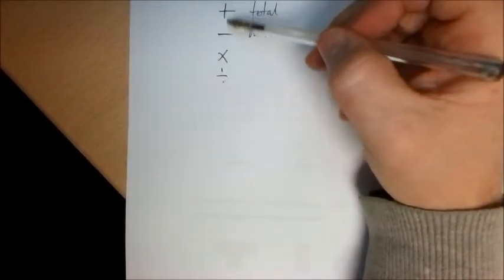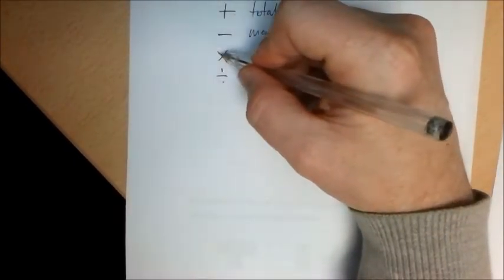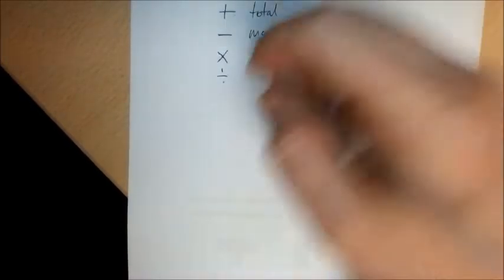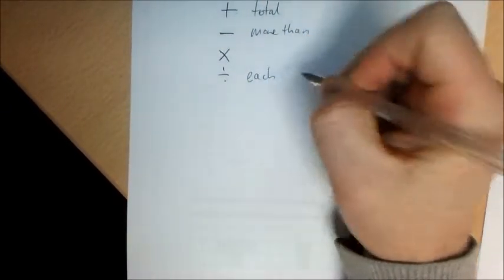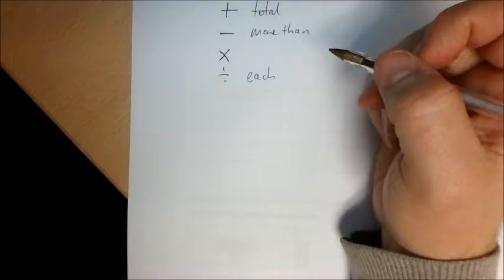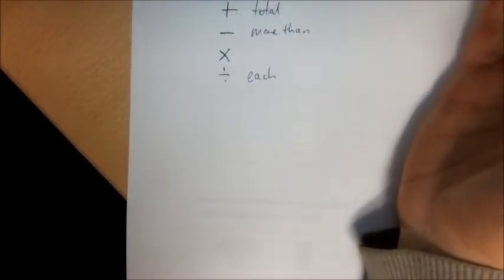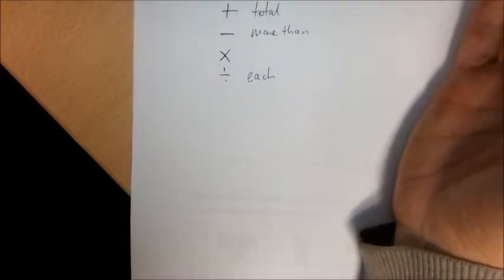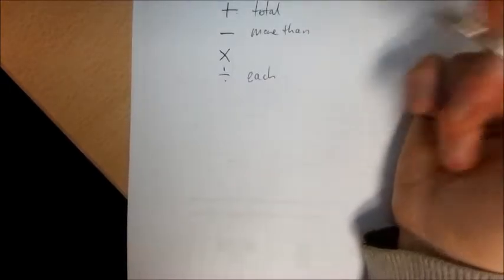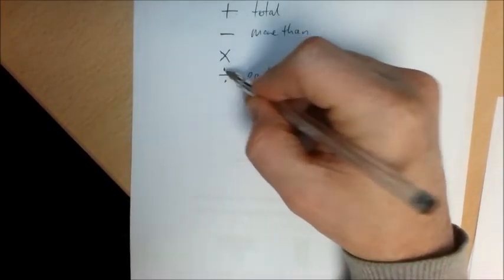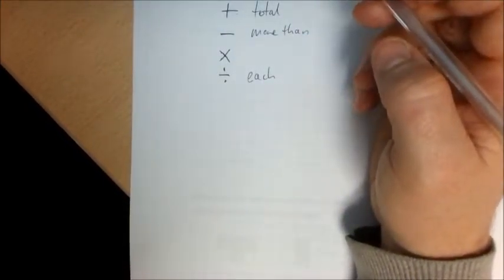The word 'each' usually suggests that division has occurred. For example, 20 pounds shared among five people means they get four pounds each—that came from division.